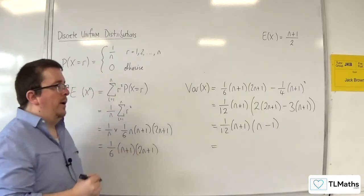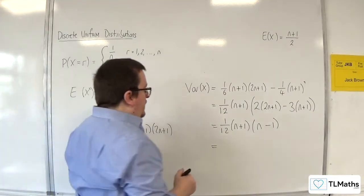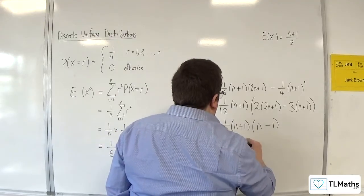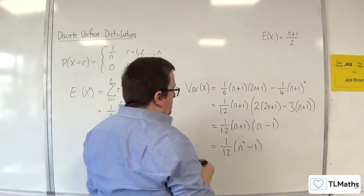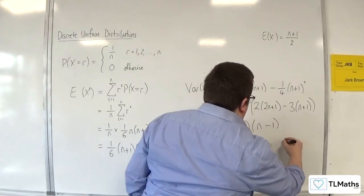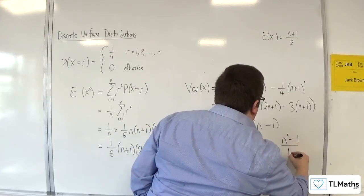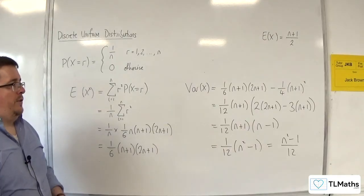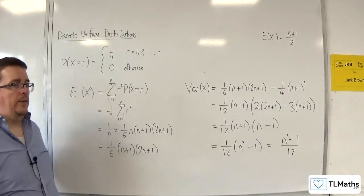And so we've got 1 twelfth of n plus 1 times n minus 1, which is the same thing as 1 twelfth times n squared take away 1, or n squared take away 1 over 12. Okay? So that's how we can derive the Var of X formula.